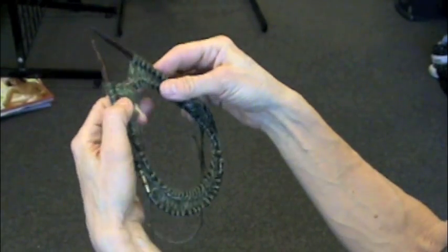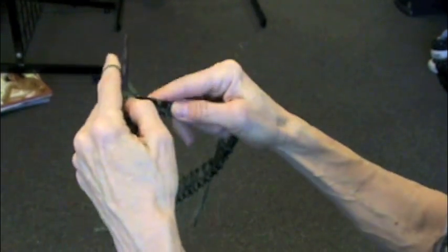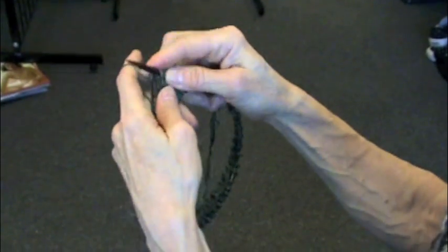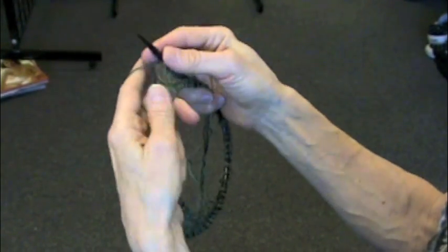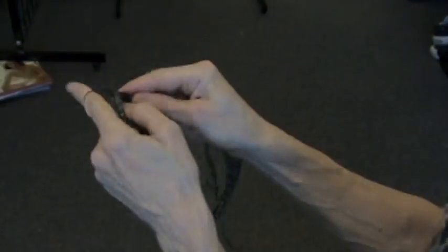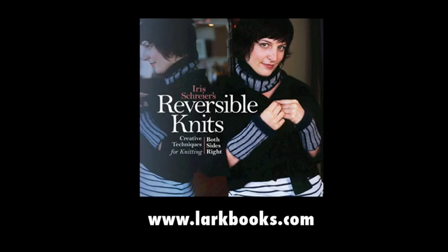The mobius is a perfect reversible piece because you can just knit around, and on one side you'll see the knit, and on the same side you'll see the purl stitches. So I'm going to knit all stitches.